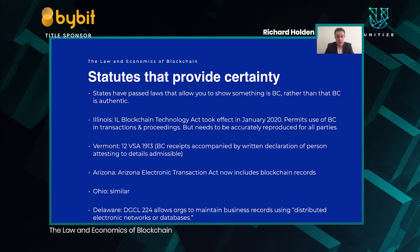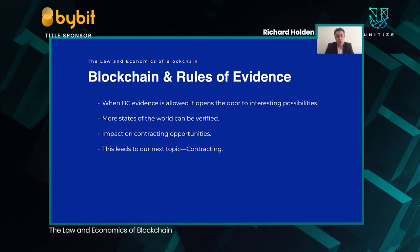Vermont, Arizona, Ohio, and Delaware have also passed legislation to include blockchain records. Delaware, given its very important status as a state where many businesses are incorporated, allows organizations to maintain business records using what it describes as distributed electronic networks or databases. When blockchain evidence is allowed, it opens the door to some interesting possibilities. As an economist, what it allows is for more states of the world to be able to be verified — a lot of what contracting is from an economist perspective is allocating actions and payments in a state-contingent way, depending on what's happening.